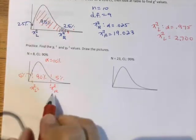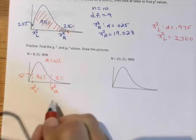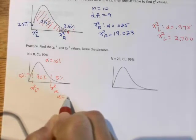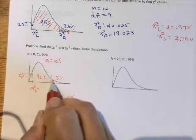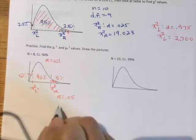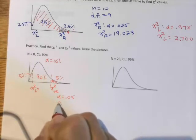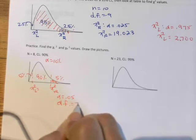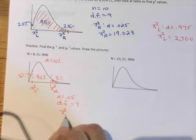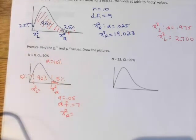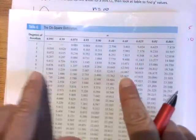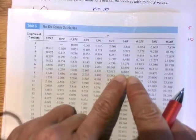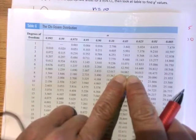So for the right side, the part I need, I'm going to look up alpha of .05 because that's how much is to the right of that chi-square right value, but my degrees of freedom are 7, so that my chi-square right value, .05 down to the 7, find where they meet, 14.067.